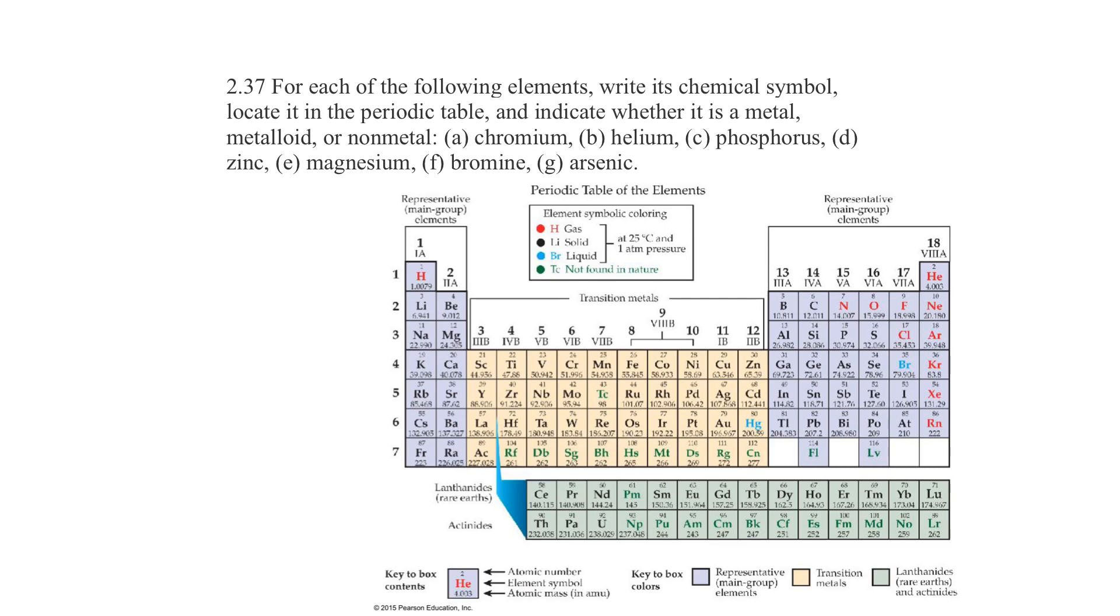For each of the following elements, write its chemical symbol, locate it on the periodic table, and indicate whether it is a metal, metalloid, or non-metal.